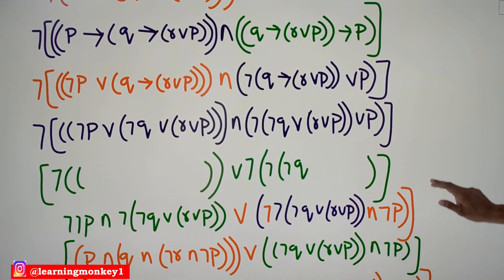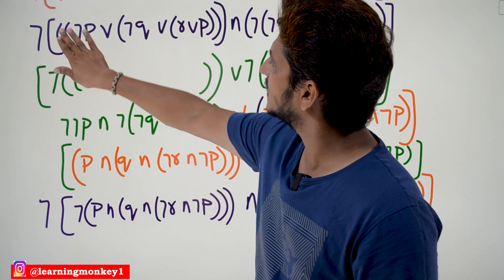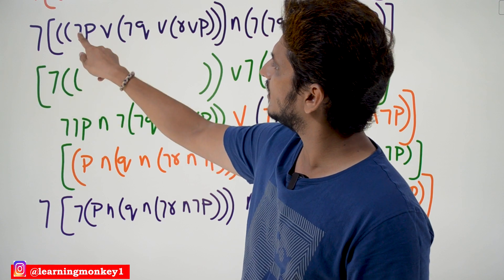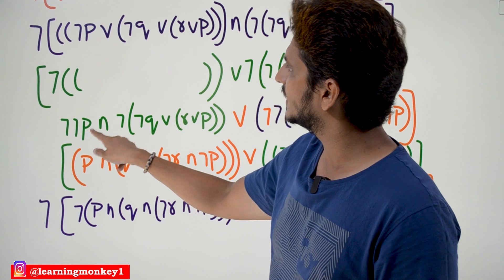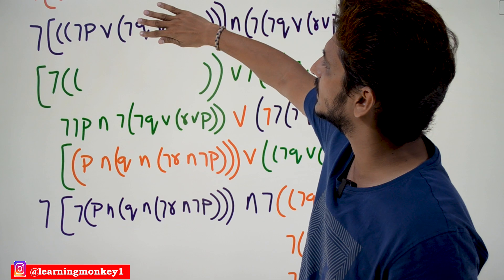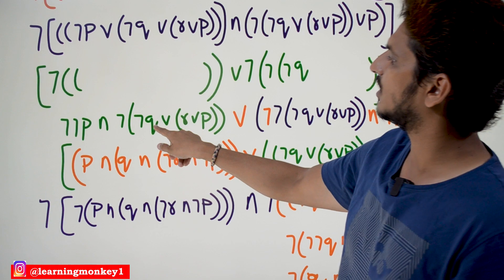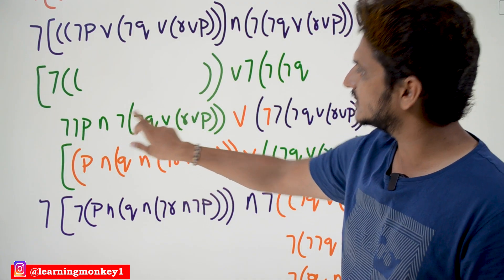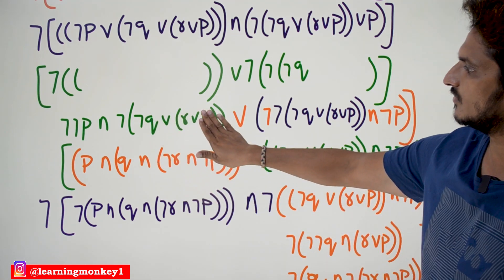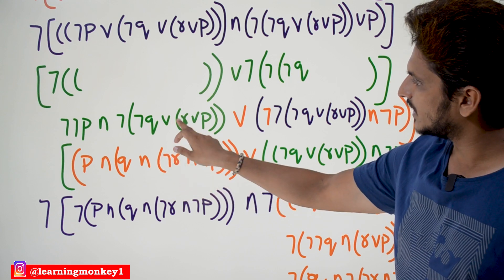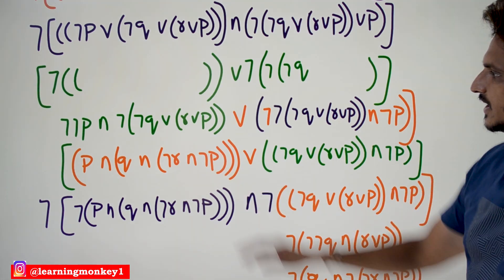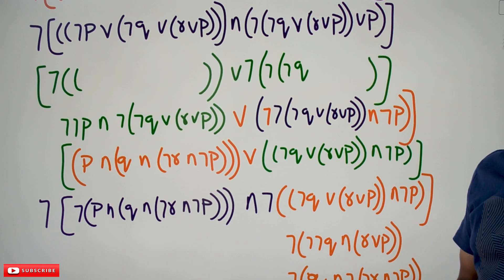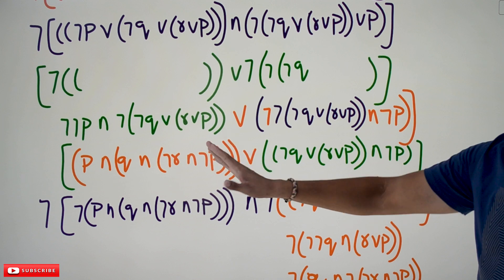Now we apply the negation to each sub-expression. Negation of negation of negation p becomes negation p; negation of negation p stays as the double negation pattern. We take x as one part and y as another part of the disjunction, applying negation inside: negation of negation p conjunction negation of (negation q disjunction r disjunction p). Negation of negation p simplifies to p. Then for the remaining term, we again take the negation inside: negation q conjunction negation r conjunction negation p — applying De Morgan's law repeatedly from our previous examples.